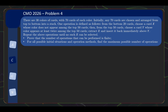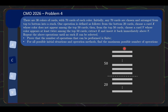This is a combinatorics problem. The problem statement is as follows — it's a bit long but we'll break it down as we go. There are 30 colors of cards, with 70 cards of each color. Initially, any 70 cards are chosen and arranged from top to bottom into a stack. The part about 70 cards of each color being available is basically saying that we can even have all cards in our final stack being the same color — so for our 70 cards, we can choose from the 30 colors with no restriction.